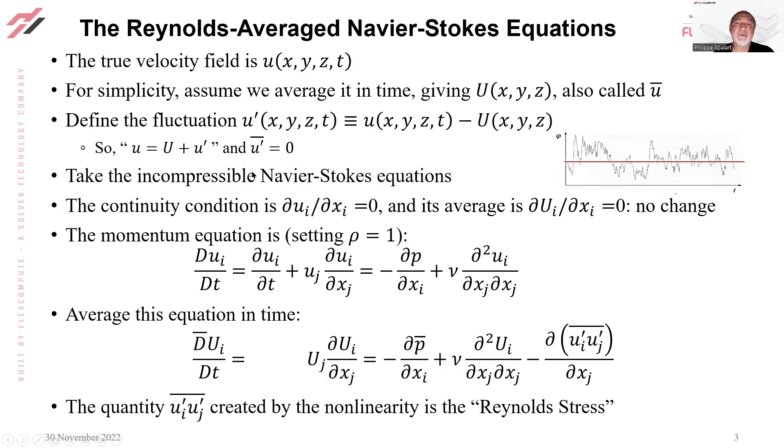Let's take the incompressible Navier-Stokes equations and average them. The continuity condition is ∂Ui/∂xi = 0, with summation over i (x, y, and z). It's linear, so when averaged, you just switch from lowercase Ui to uppercase, no change.